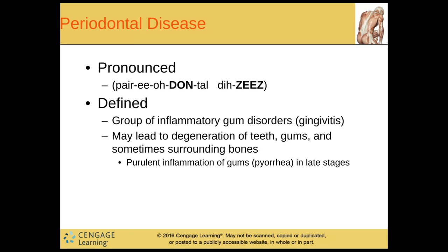And we have periodontal disease. This is a group of inflammatory gum disorders like gingivitis. It may lead to the degeneration of the teeth, gums, and sometimes the surrounding bones. It can cause pyorrhea, which is inflammation of the gums in a later stage. It can lead to the breaking down of gum tissue, breaking down of the teeth, tooth loss, and really bad breath.